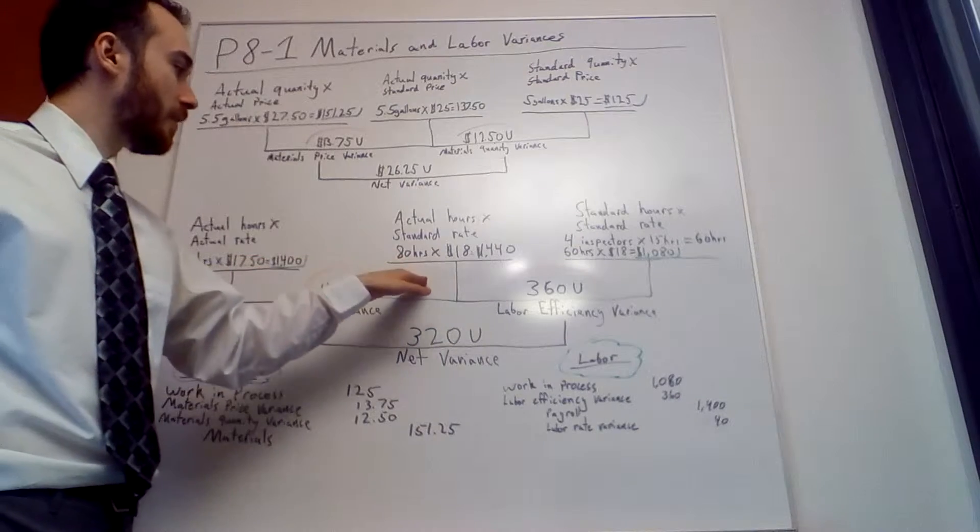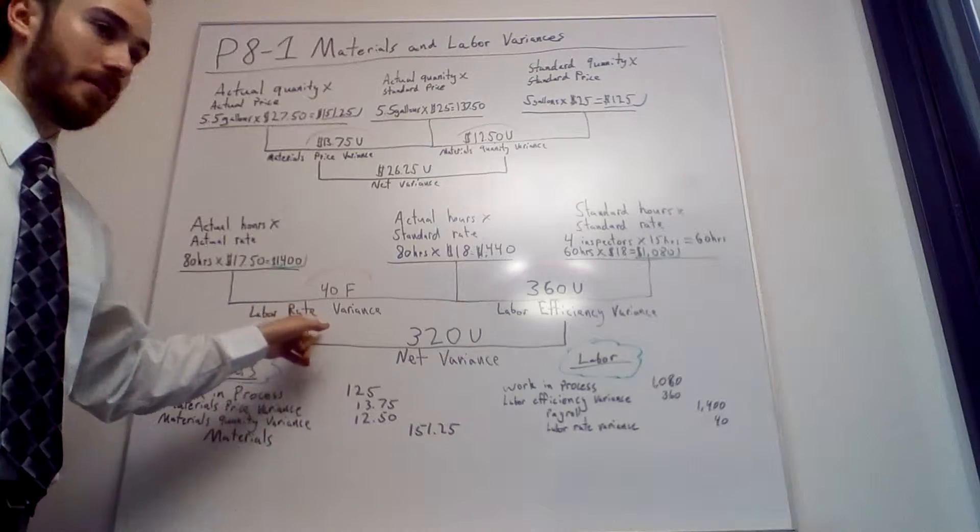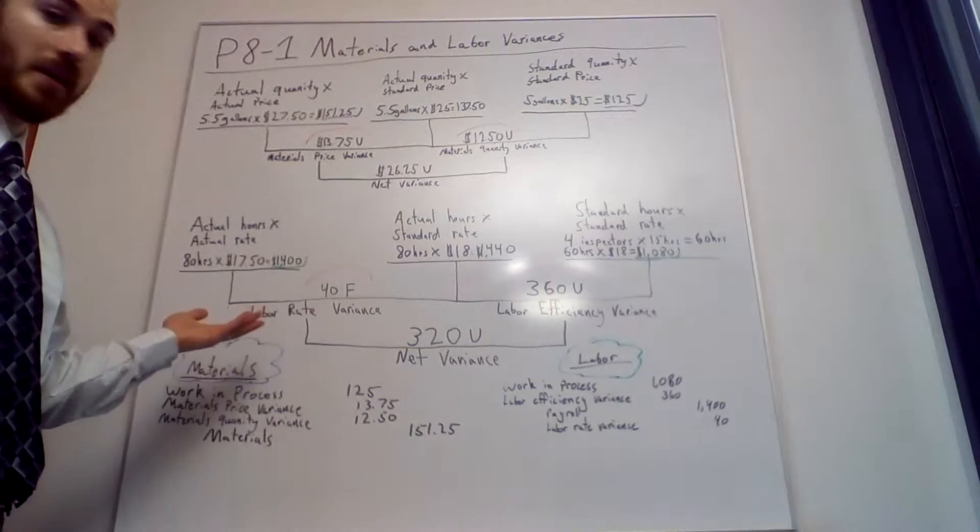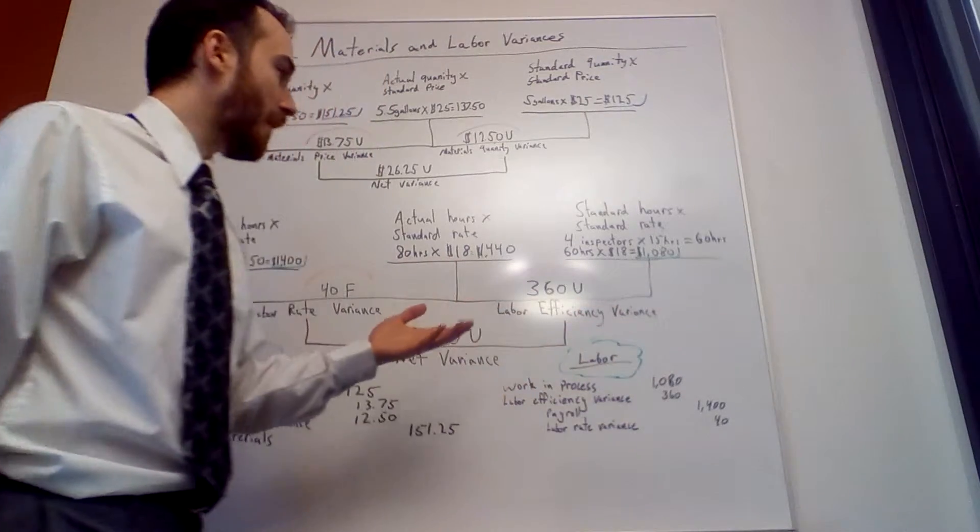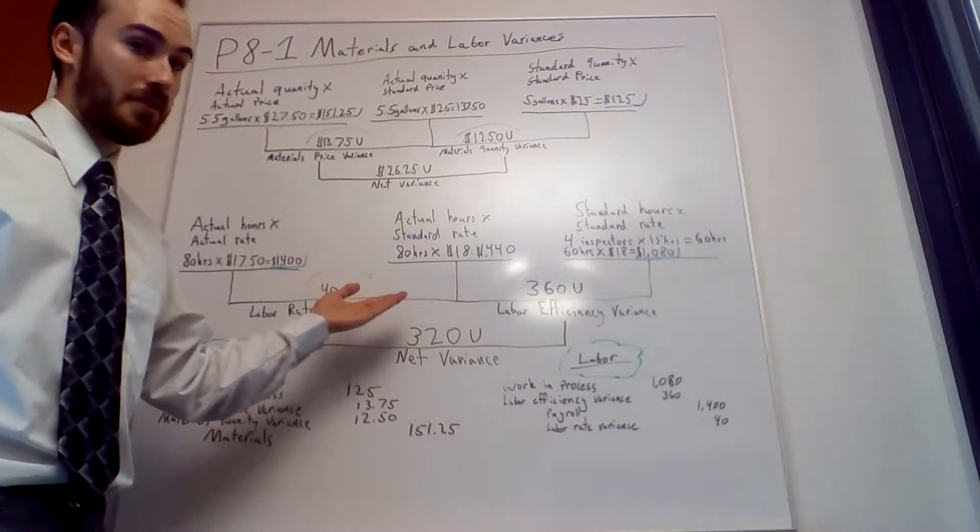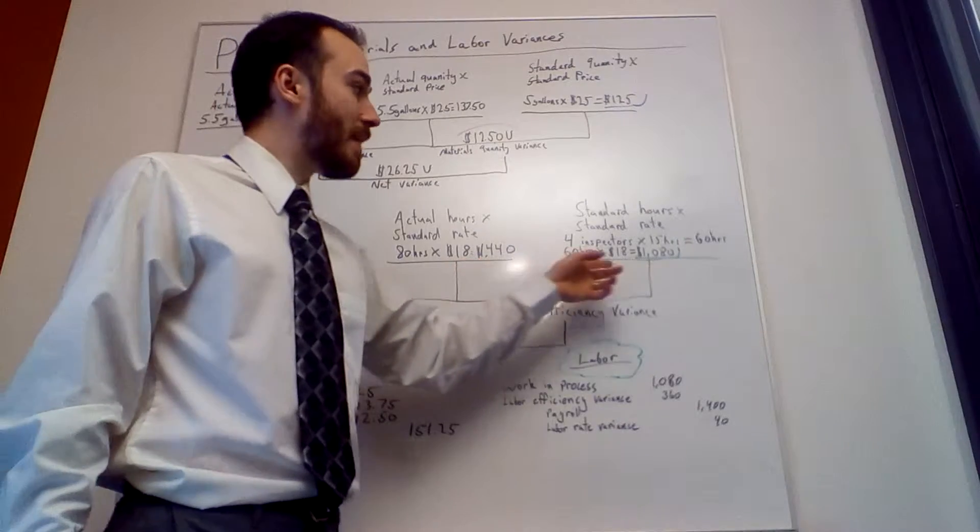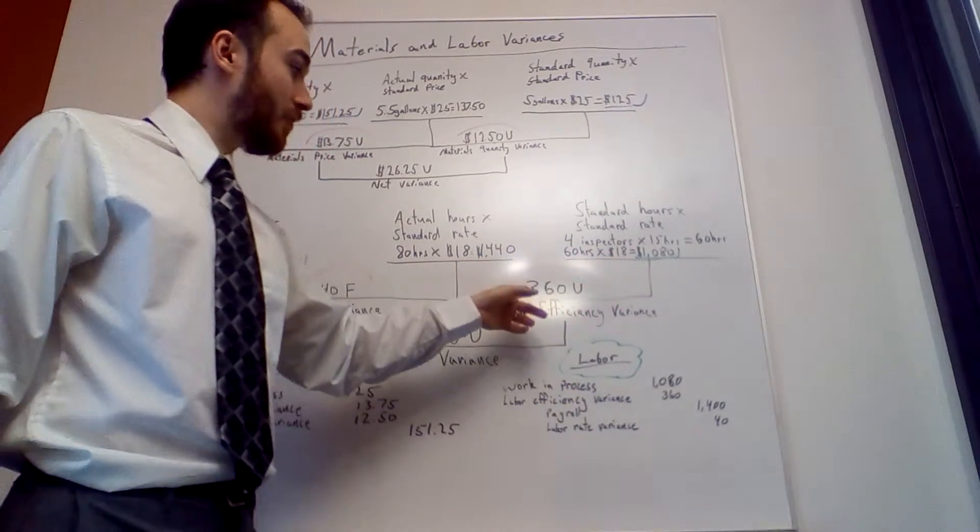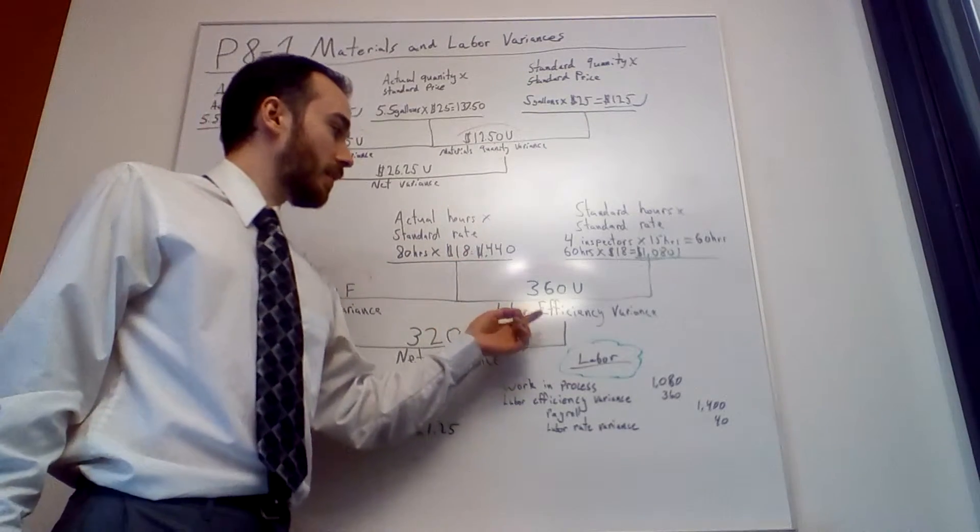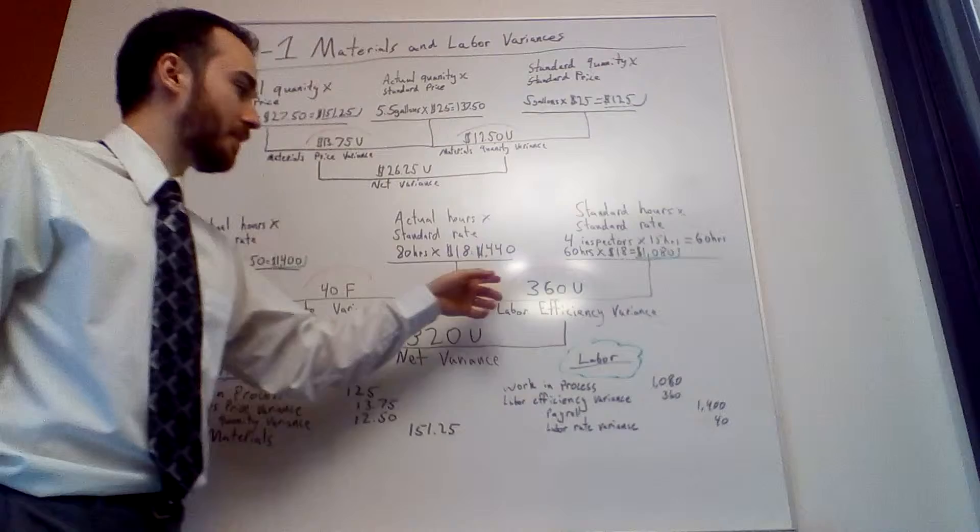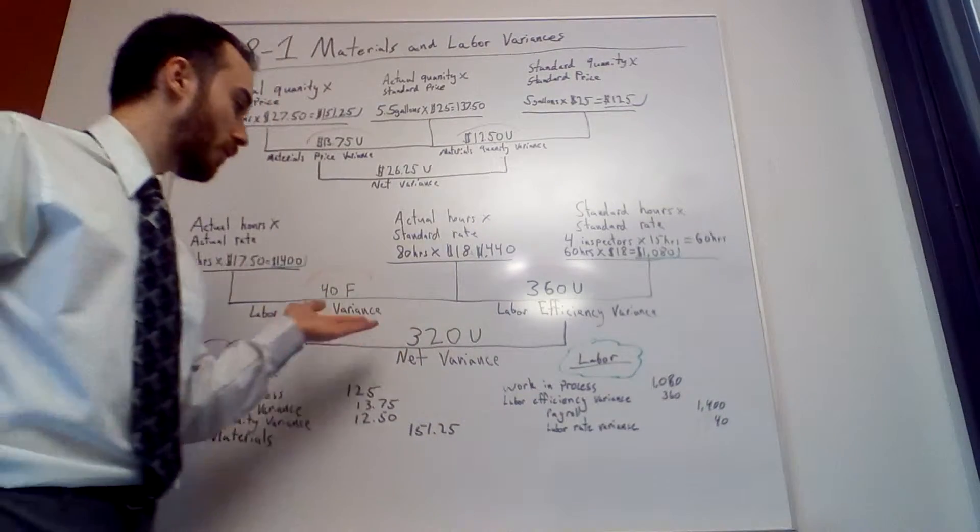If we take $1,400 minus $1,440, the right is bigger than the left, so it's favorable. We actually saved money on the labor rate. The labor rate variance is $40 favorable. But for labor efficiency variance, we thought they were only going to work 60 hours but they worked 80 hours. $1,440 minus $1,080 is $360 unfavorable because the left is bigger than the right. The net variance is $320 unfavorable. We lost money on that one too.